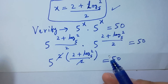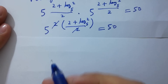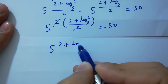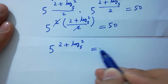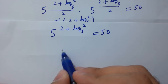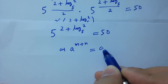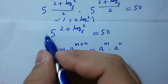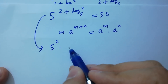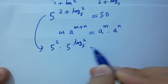We have 5 to the power 2 plus log 2 to the base 5 equals 50. Using the rule a to the power m plus n equals a to the power m times a to the power n, we have 5 to the power 2 times 5 to the power log 2 to the base 5 equals 50.